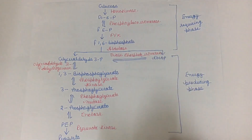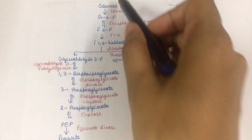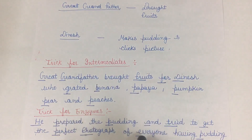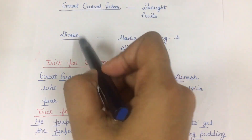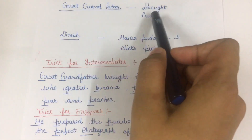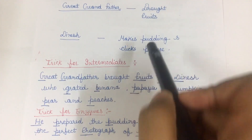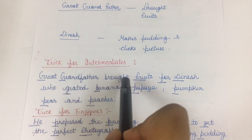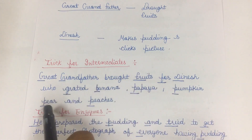Sometimes it gets really complicated to remember glycolysis in the correct sequence, so the trick is to memorize it using a sentence. You can see here: 'Great grandfather and Dinesh' — great grandfather is bringing fruits and Dinesh is making pudding out of it and clicking pictures. The trick for intermediates is: 'Great grandfather brought fruits for Dinesh who grated banana papaya pumpkin pear and peaches.'